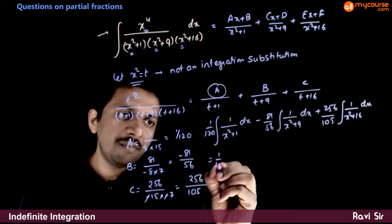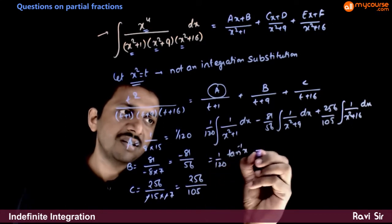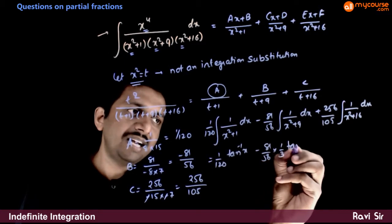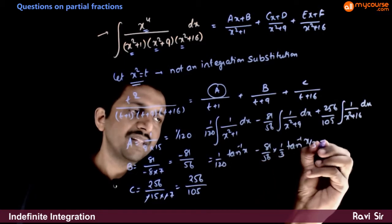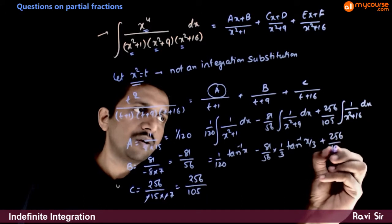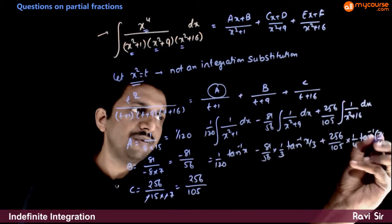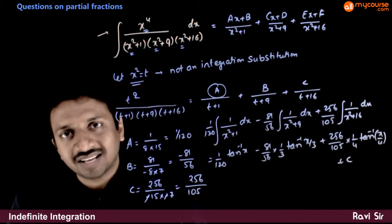That is equal to 1 by 120 tan inverse x minus 81 by 56 times 1 by 3 tan inverse of x by 3 plus 256 by 105 times 1 by 4 tan inverse of x by 4 plus c is the answer.